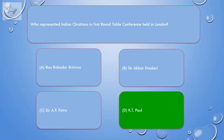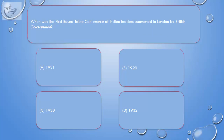Correct answer is D. K.T. Paul. Question: When was the first Round Table Conference of Indian leaders summoned in London by the British government?